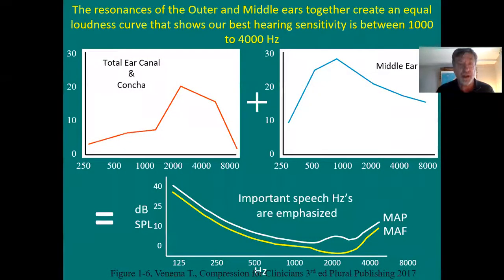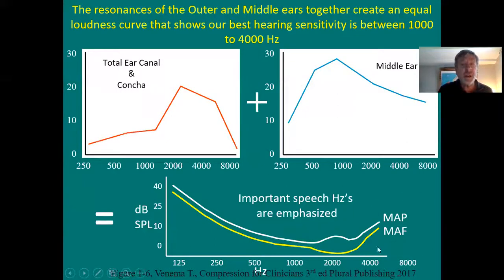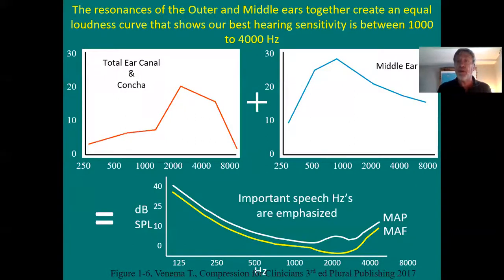The resonances of the outer and middle ears together create an equal loudness curve that shows our best hearing sensitivity is between 1 to 4000 Hz. Zero dB SPL is defined as the softest it took to hear a 1000 Hz tone at one meter from a speaker with two ears. That's why 1000 Hz sits right at zero. For 250 Hz, you need more; for 2000 Hz, it's actually less than zero dB SPL.